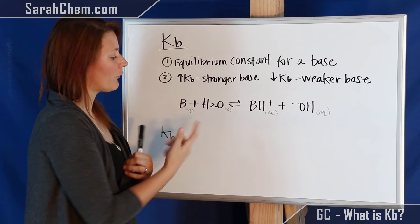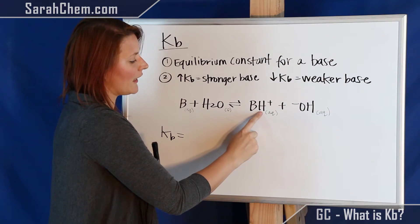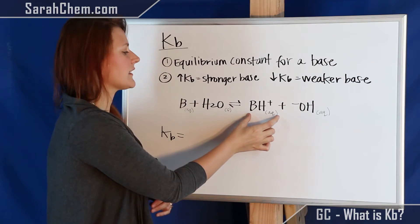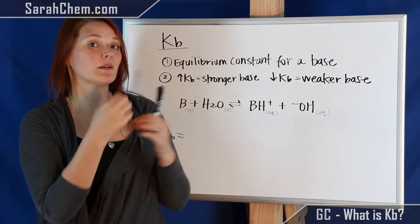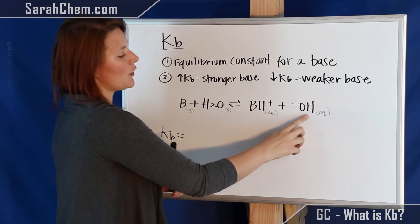And the only thing it can accept the proton from is the water. So what we're going to have is the B is going to take on an H, so this is now the conjugate acid, and it's BH plus because it took an H plus from the water. Now the water losing that proton becomes OH minus.